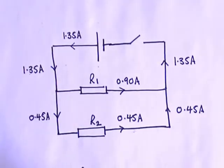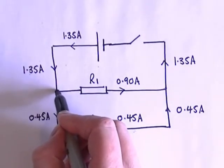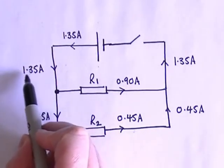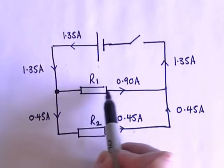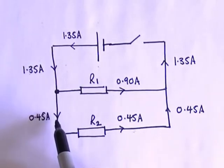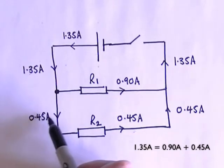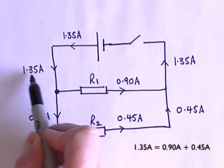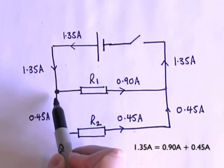Now we need to see if we can work out why the currents are different in different parts of the circuit. So we're going to start by looking at that junction. Going into the junction I've got a current of 1.35 amps, and coming out I've got two currents — 0.90 amps and 0.45 amps. And 0.45 added to 0.90 comes to 1.35 amps. So here the current is splitting, some of it's going that way and some of it's going that way.